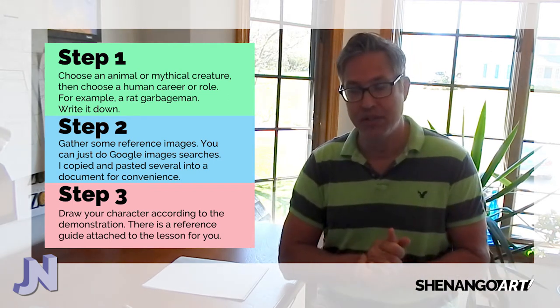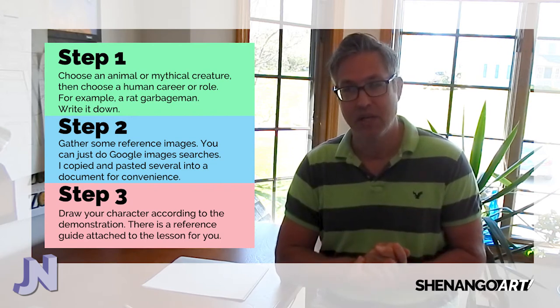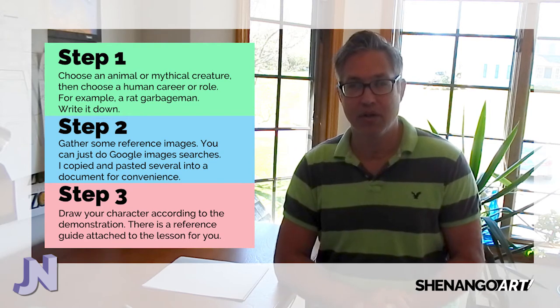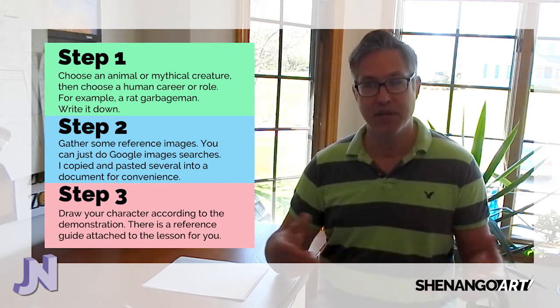Step three is to draw your character according to the eight-heads scheme I'm going to give you. This isn't something I'm making up — all artists know about this; teachers teach it. It's usually seven heads but we're doing eight because the math is easier. An eight-head character is more like a heroic figure — like a superhero — taller, bigger, more muscular. You can adapt it however you want.